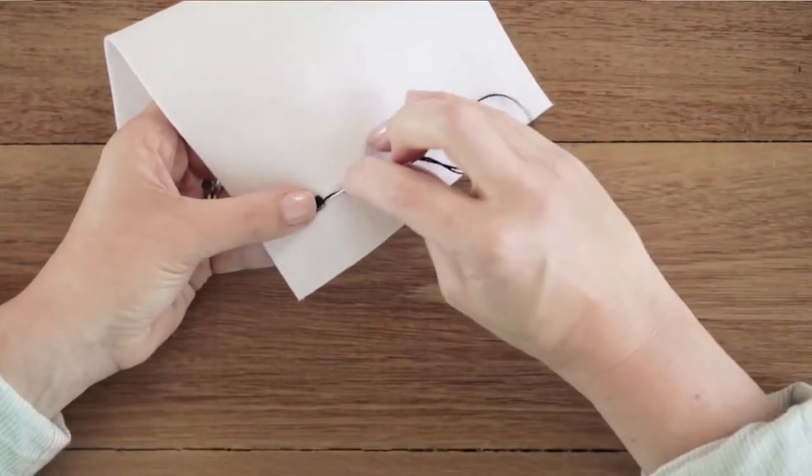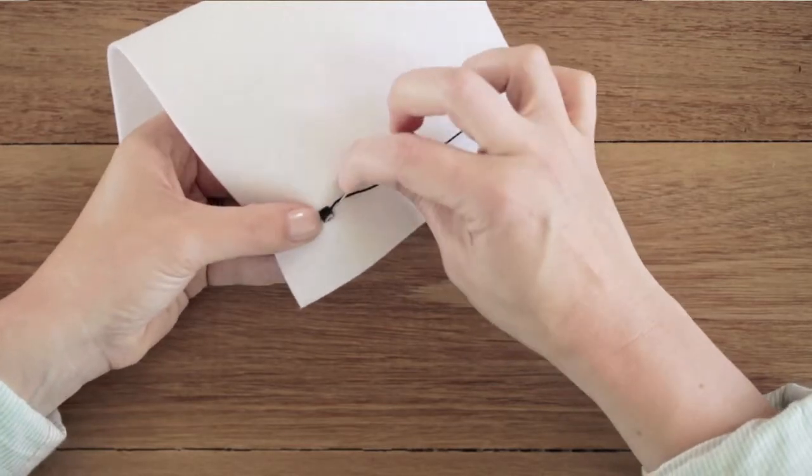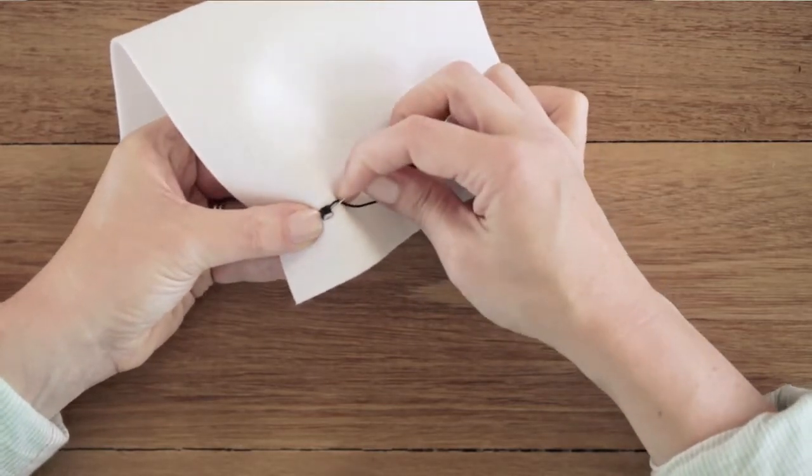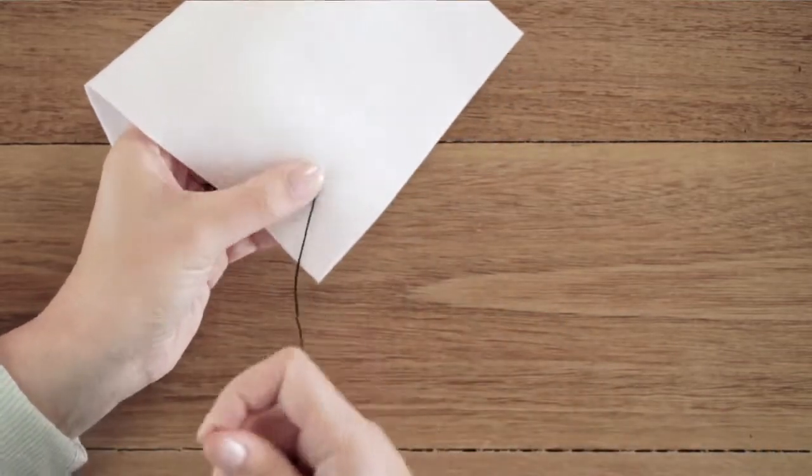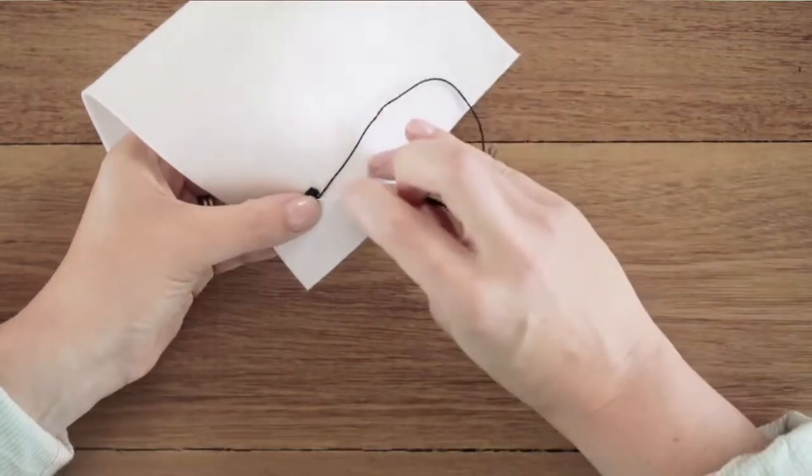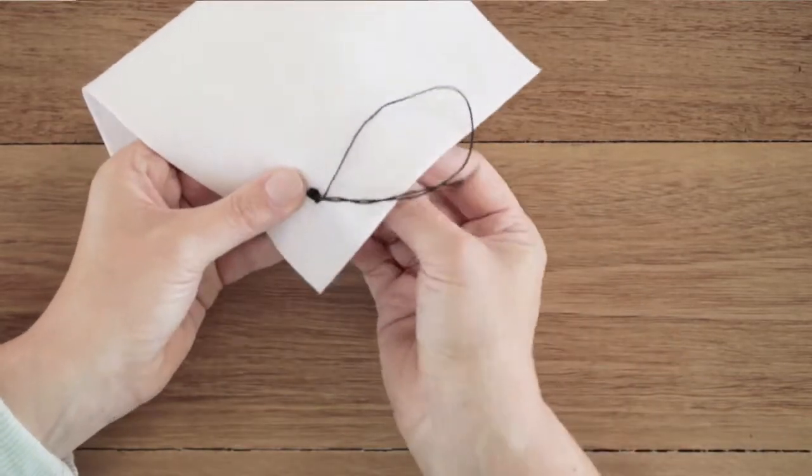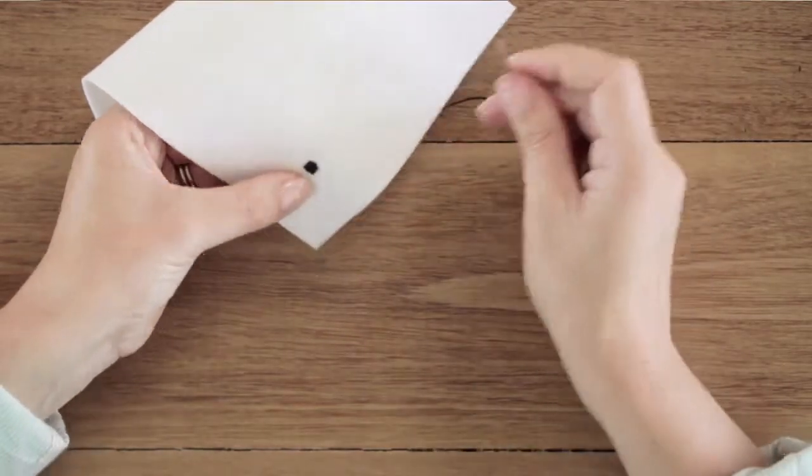So we go in and then back out right beside the other stitch. One last one. And that's satin stitch.